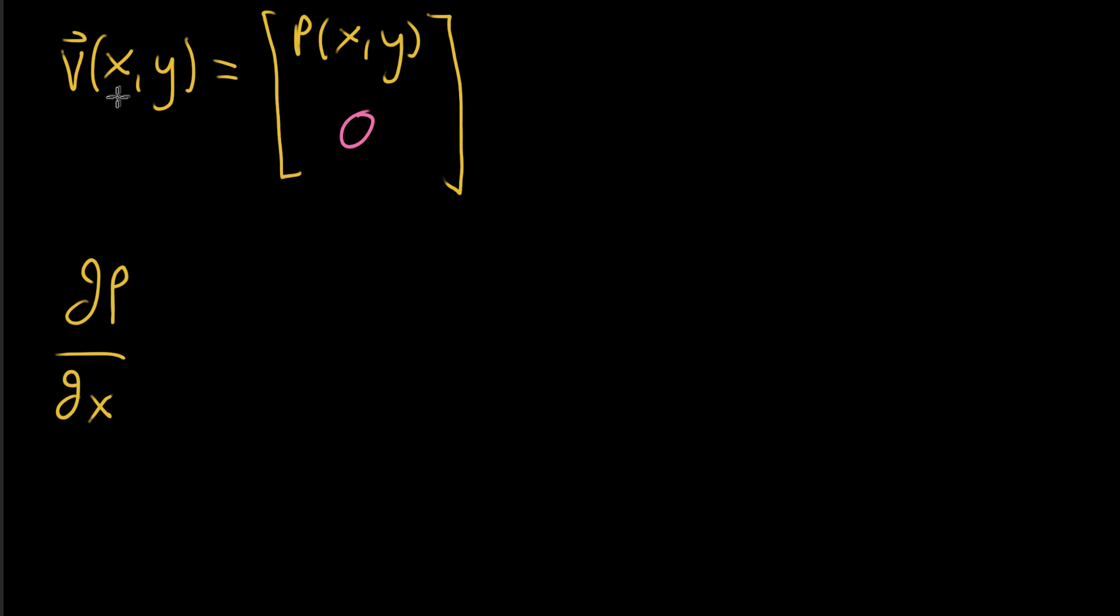Hello again. In the last video, we were looking at vector fields that only have an x component, basically meaning all of the vectors point just purely to the left or to the right with nothing up and down going on. And we landed at the idea that the divergence of v, when you take the divergence of this vector-valued function,